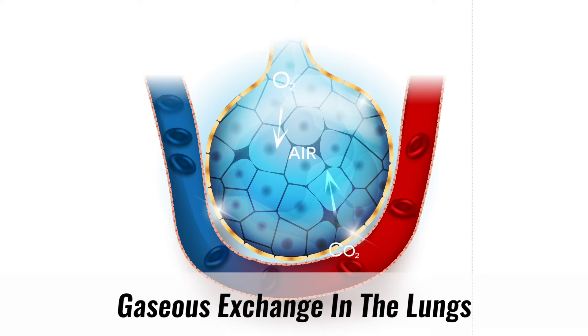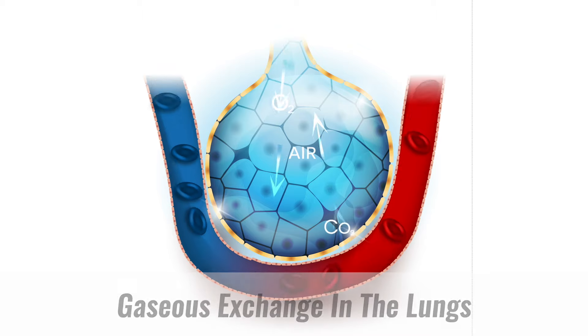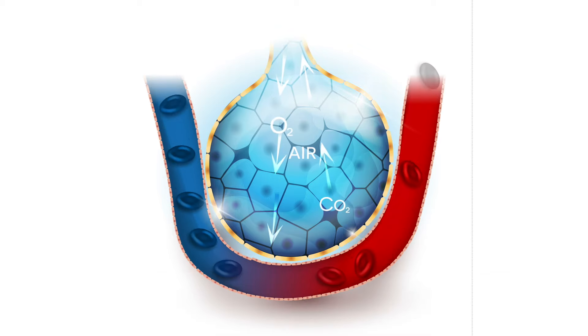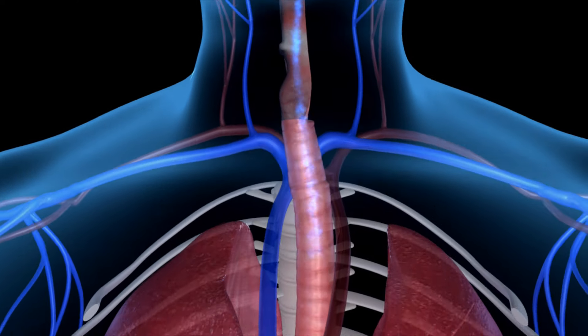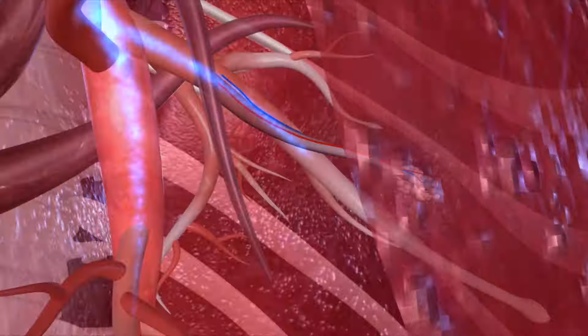Gaseous exchange refers to the process of oxygen and carbon dioxide moving between the lungs and blood. Air passes into the lungs via bronchi, bronchioles, and then into alveoli.